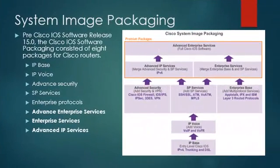Before Cisco IOS software release 15, Cisco IOS software packaging consisted of 8 packages for Cisco routers. This packaging scheme was introduced with the Cisco IOS 12.3 mainline train. The packaging image consists of 8 IOS images, 3 of which are considered premium packages. The 5 non-premium packages are: IP Base (an entry-level IOS software image), IP Voice (converged voice and data VoIP, VoFR, and IP Telephony), Advanced Security (security and VPN features including Cisco IOS Firewall), Service Provider Services (adds ATM, VoATM, and MLPLS to IP Voice), and Enterprise Base (Enterprise Protocols, AppleTalk, IPX, and IBM support).